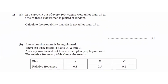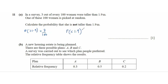Question 11: in a survey, 3 out of every 100 women were taller than 1.9 metres. One of these 100 women is picked at random. The probability of a woman being taller than 1.9 is 3 over 100. So the probability of a woman not being taller than 1.9 is 1 minus 3 over 100, which is 97 over 100, or 0.97.